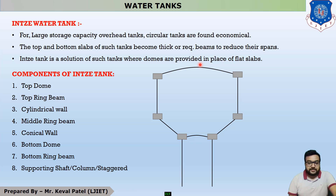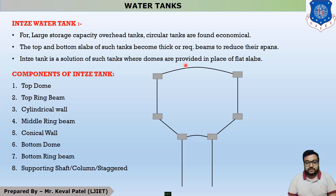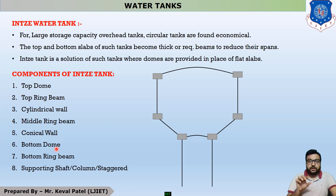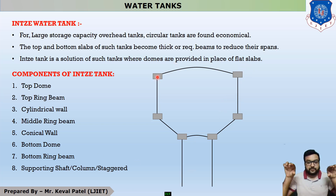Now we are discussing the different components of the Intze type water tank. As you can see, there are two circular domes — the first dome is provided at the upper portion, called the top dome, and the second is called the bottom dome. After that, there is a circular ring beam. From the elevation view, you can see two beams, which are generally circular ring beams.